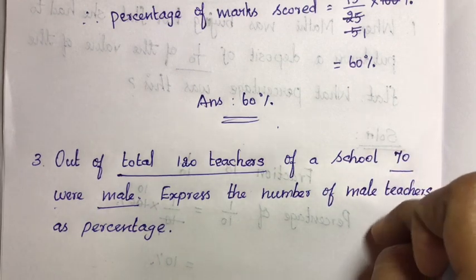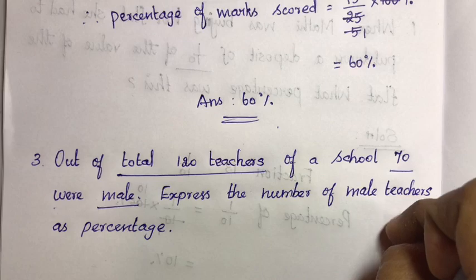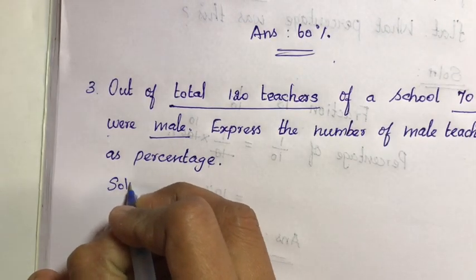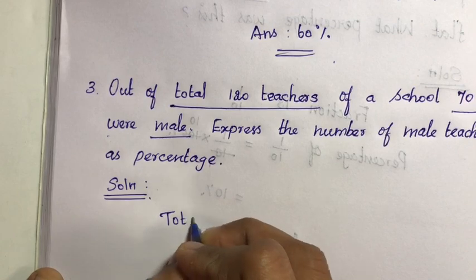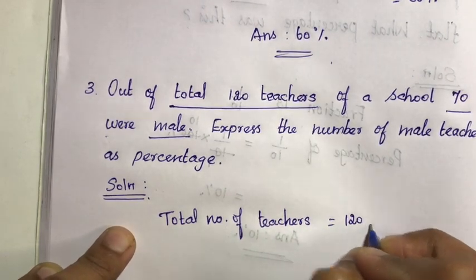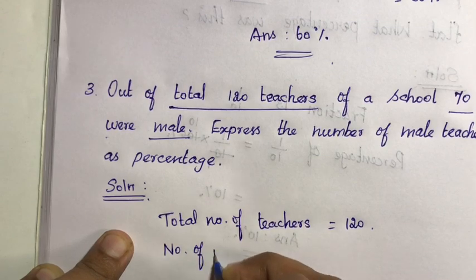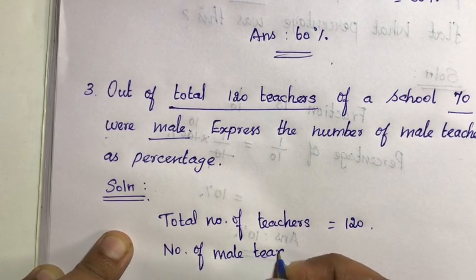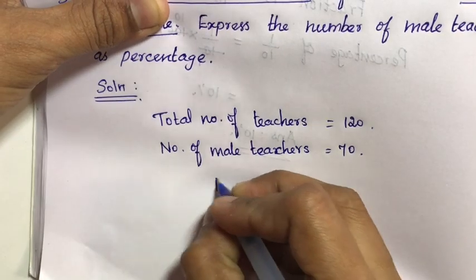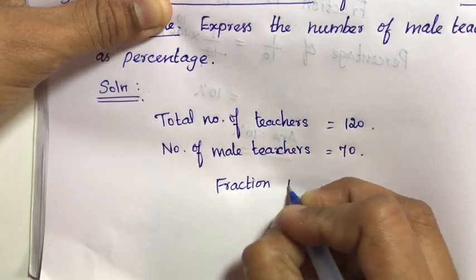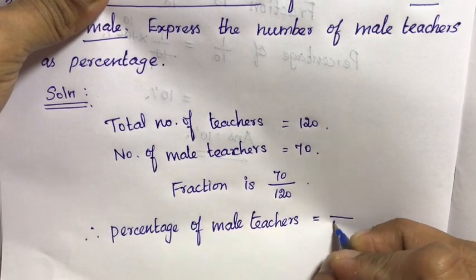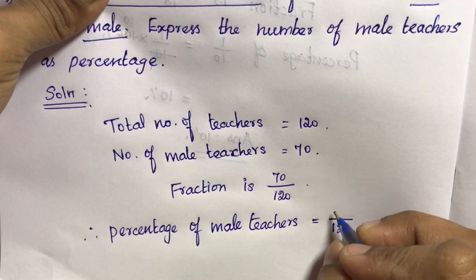70 is the numerator, 120 is the denominator — fraction is created. To convert to percentage, multiply by 100. Solution: Total number of teachers is 120. Number of male teachers is 70. So percentage of male teachers is equal to 70/120 multiplied by 100.